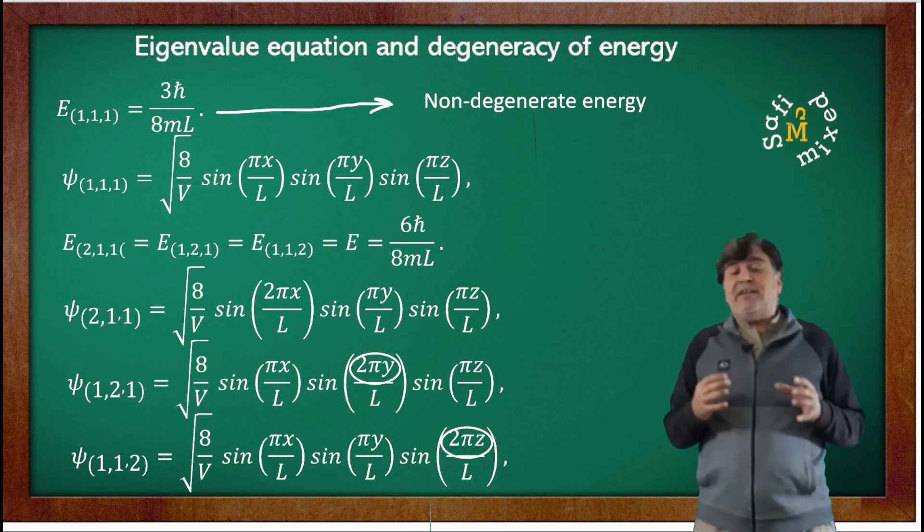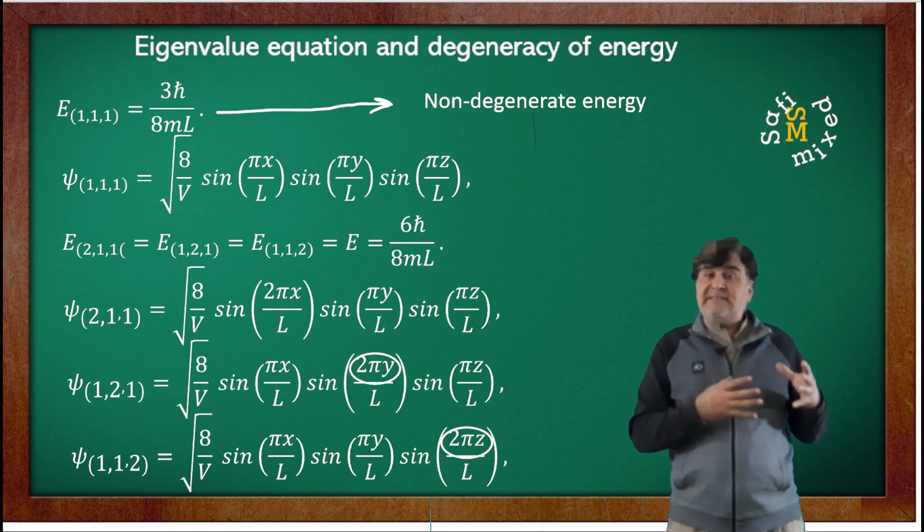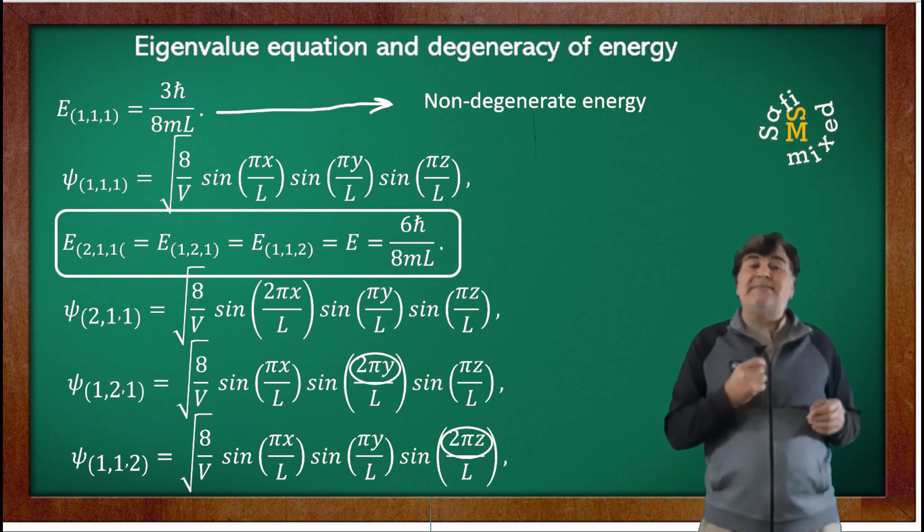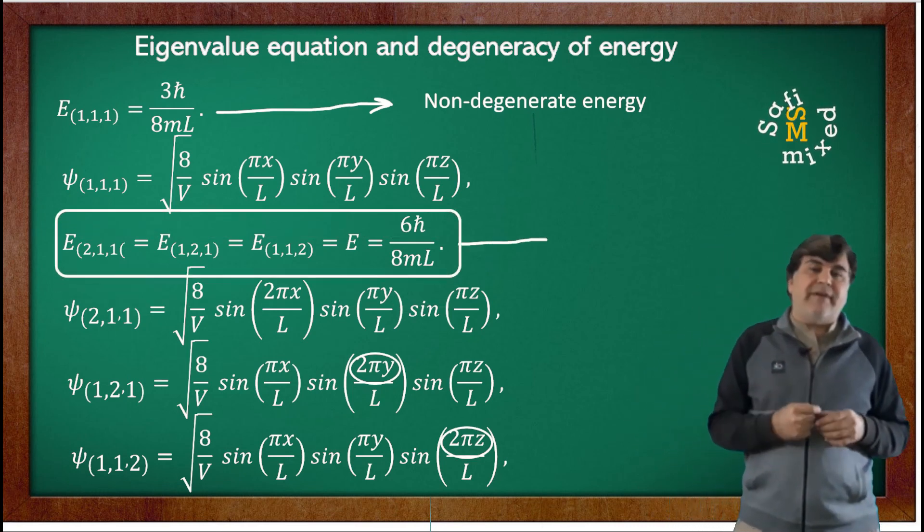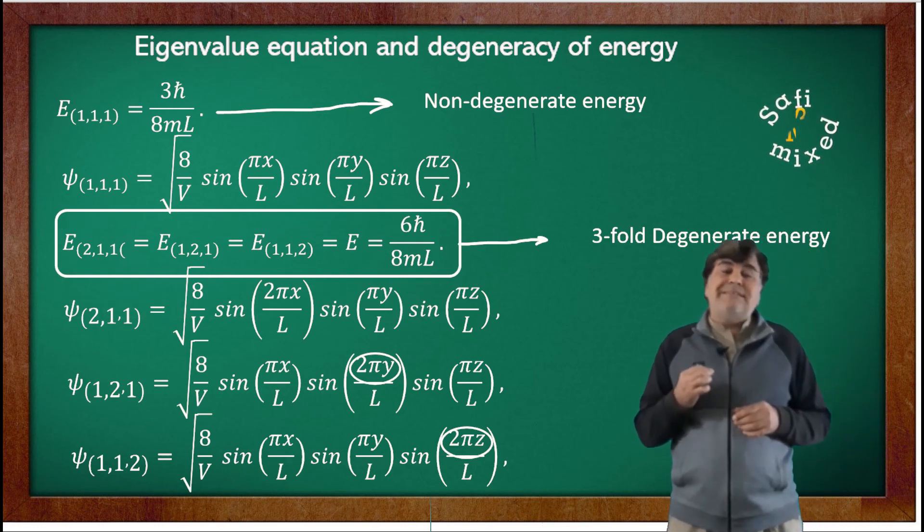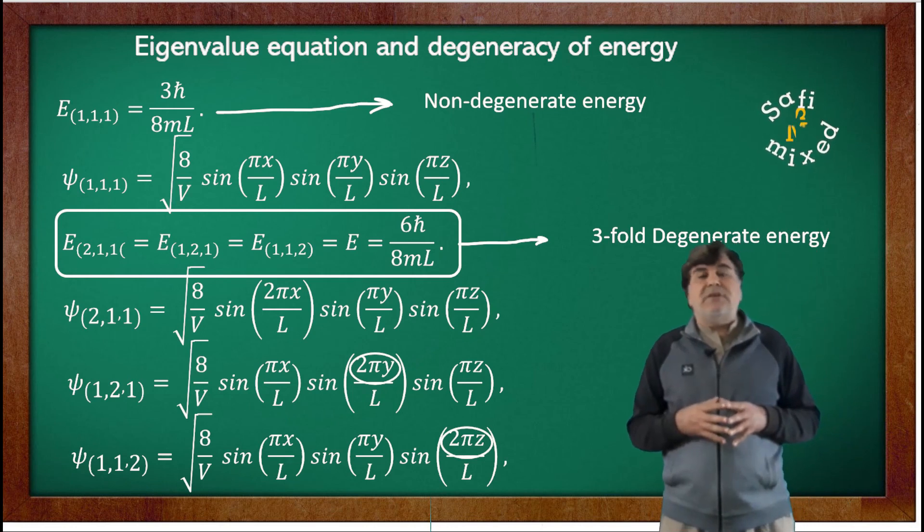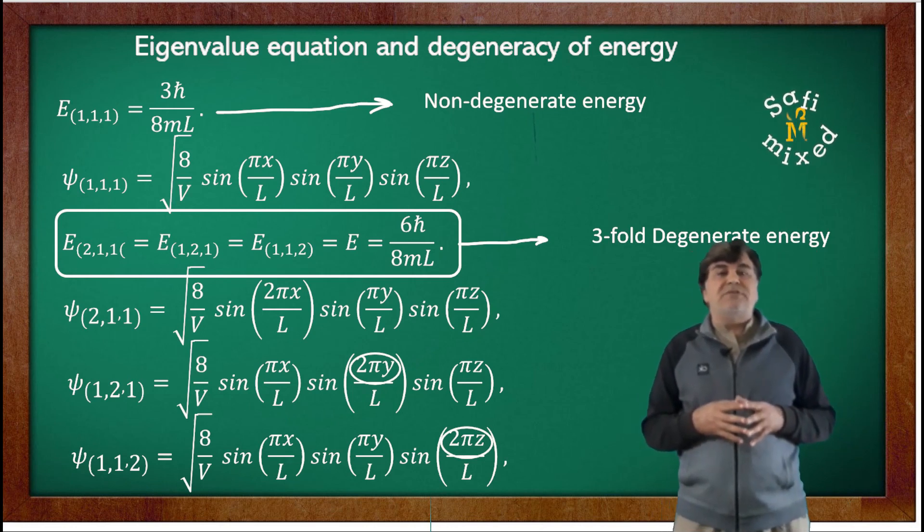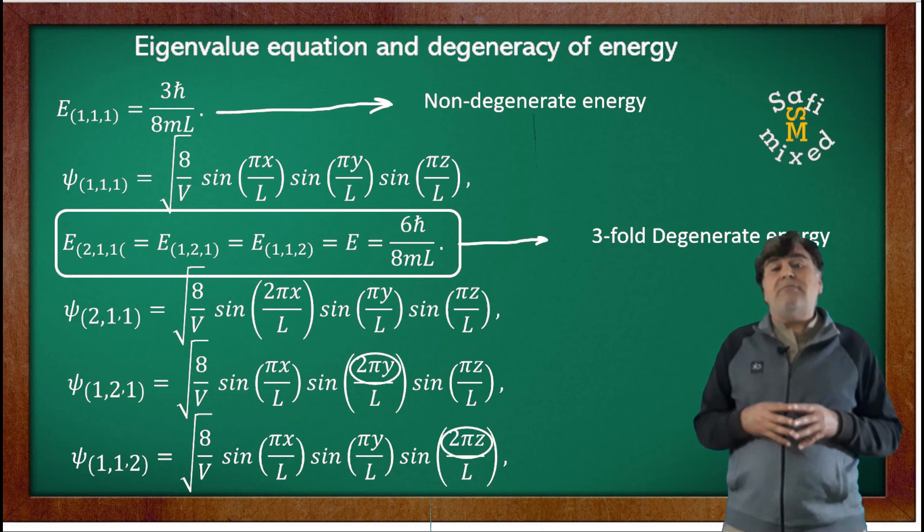Thus, in this case, the energy corresponding to these three sets of quantum numbers is in fact threefold degenerate. Now it can easily be shown that the linear combination of the degenerate eigenfunctions is also an eigenfunction corresponding to the same eigenvalue.